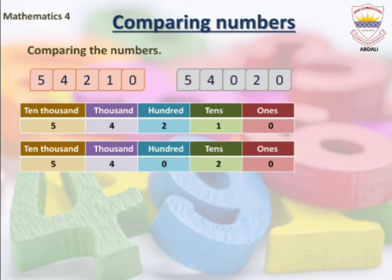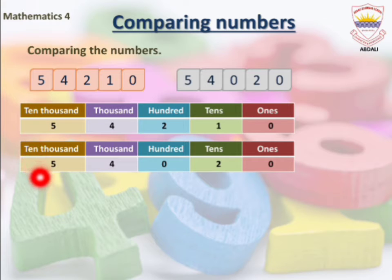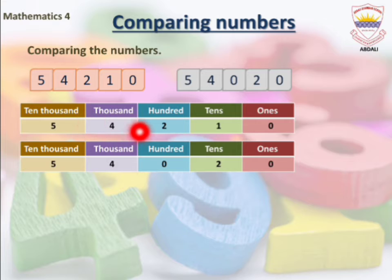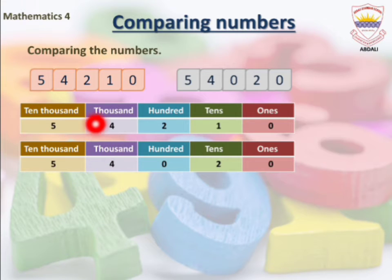Now let's compare. First, we compare the ten thousands place. In both place value charts, five is under ten thousands — so the ten thousands places are the same. Next, in the thousands place, four is under thousands in both charts — so the thousands places are also the same.